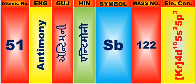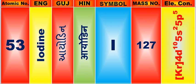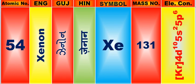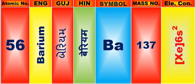Atomic number is 51, name of atom is Antimony. Atomic number is 52, name of atom is Tellurium. Atomic number is 53, name of atom is Iodine. Atomic number is 54, name of atom is Xenon. Atomic number is 55, name of atom is Cesium. Atomic number is 56, name of atom is Barium.